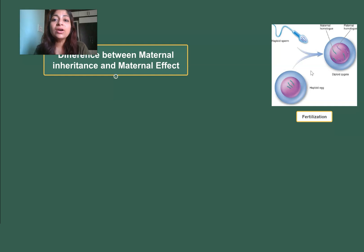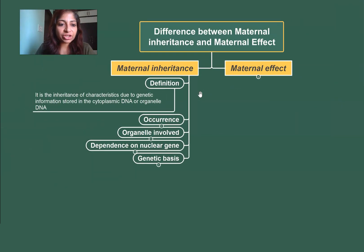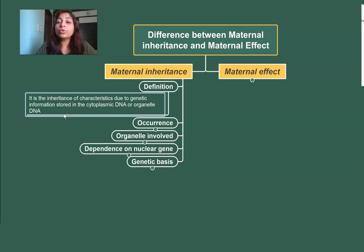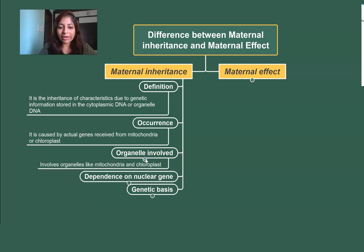Let's take a look at which is which. Maternal inheritance — definition: it is the inheritance of a characteristic due to genetic information stored in the cytoplasmic DNA or organelle DNA, such as chloroplast DNA or mitochondrial DNA. These organelles have genes of their own that code for proteins, so any characteristic coded by genes on the organelle genome will come to the offspring directly from the mother. Occurrence: it is caused by actual genes received by the zygote from mitochondria or chloroplast of the mother.